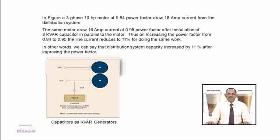In other words, the distribution system capacity increased by 11% after improving the power factor. The 3 kVAR capacitor connected in parallel to the motor supplies 3.6 amperes, while the motor draws 16 amperes from the line, compared to 18 amperes when the power factor was 0.84. In this case, the capacitor bank is working as a kVAR generator.